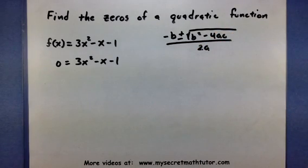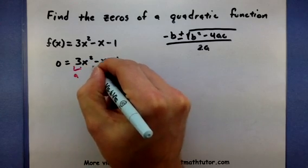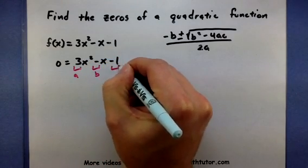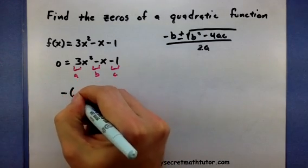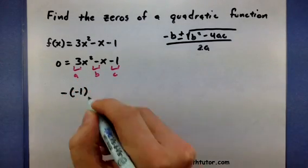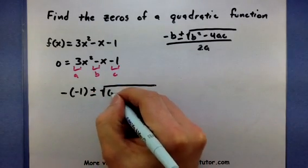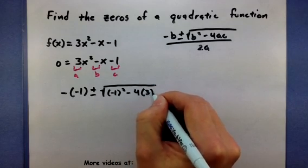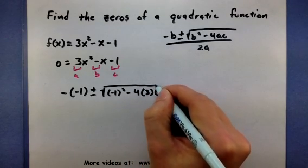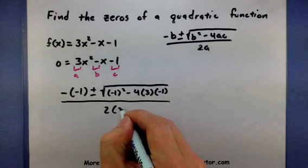Alright. So now that we have the quadratic formula, we identify our a, b, and c and basically plug them in. Let's say I have negative, negative 1 plus or minus the square root of negative 1 squared minus 4 times a times c all over 2 times a. Okay.